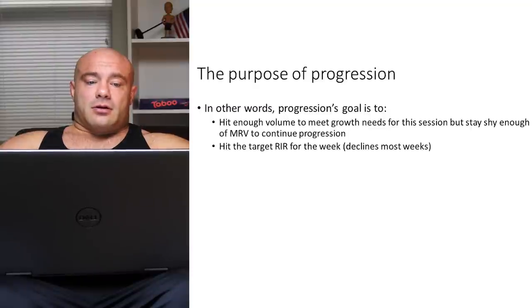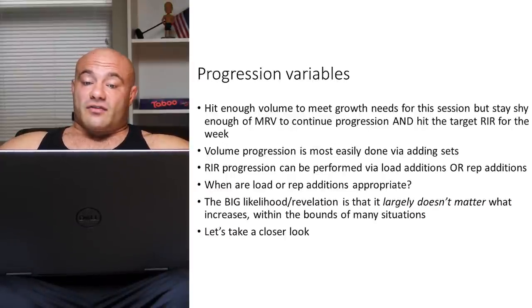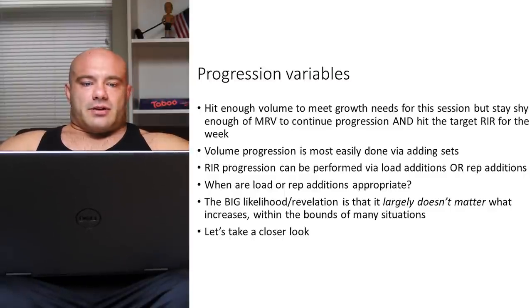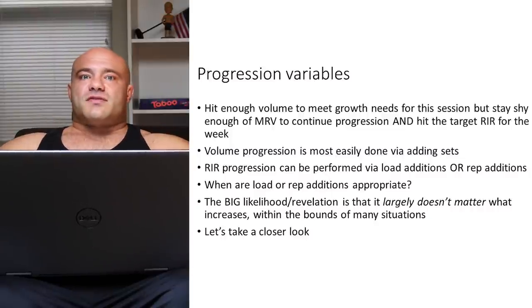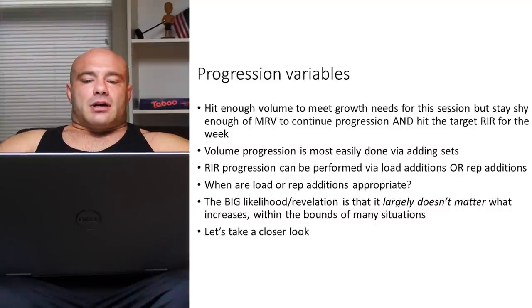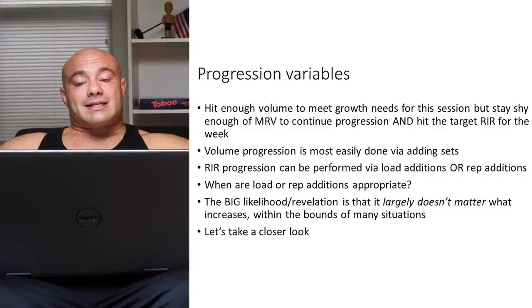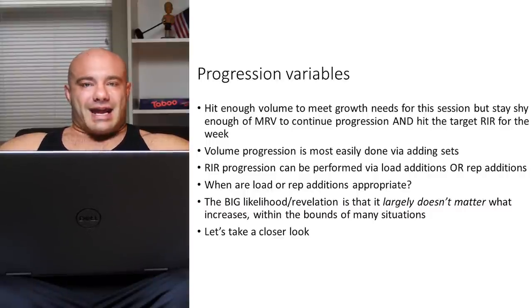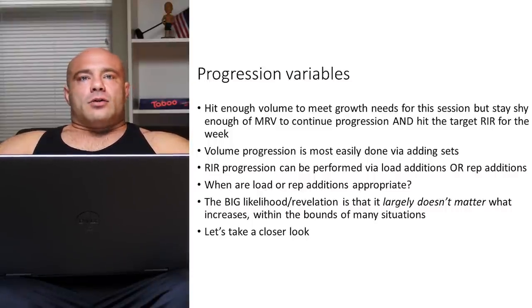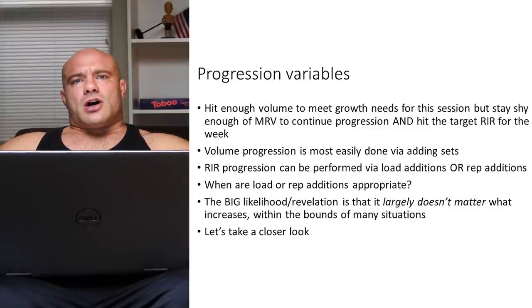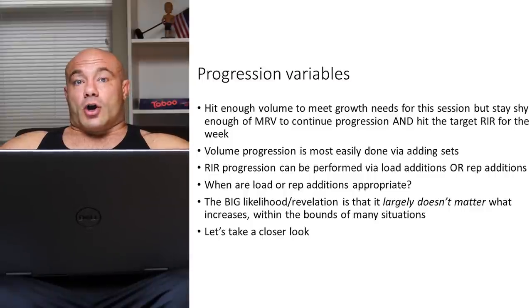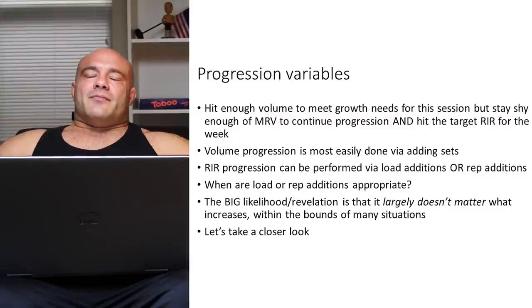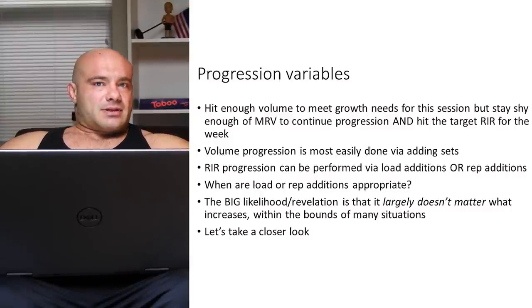Which variables do we change? Hit enough volume to meet growth needs — through sets. We're going to titrate our number of sets and have a formula for it later. What about hitting the RIR? We can hit RIR either through progressing in load or progressing in repetitions — adding weight to the bar or adding reps. Generally speaking, as long as you're hitting the reps in reserve you need, there's very little difference between progressing by load and progressing by reps. Both are great tools, though sometimes one is better than the other.